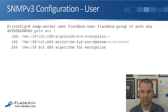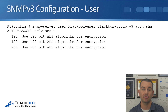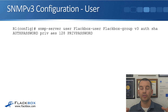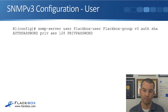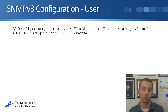After specifying AES encryption, I specify whether it's 128, 192, or 256 bit - obviously the higher the number the more secure it's going to be, but it's going to take more CPU cycles and be a little slower. The complete command is: 'snmp-server user flatbox-user flatbox-group v3 auth sha authpassword priv aes 128 privpassword'. That is my user and group set up on the router or switch.